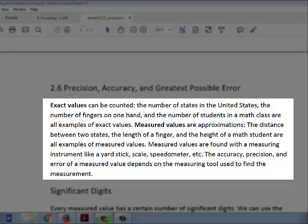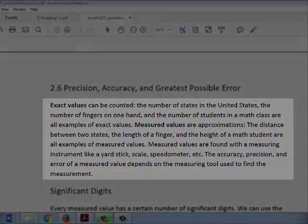Measured values are found with a measuring instrument like a yardstick, scale, speedometer, etc. The accuracy, precision, and error of a measured value depends on the measuring tool used to find the measurement.